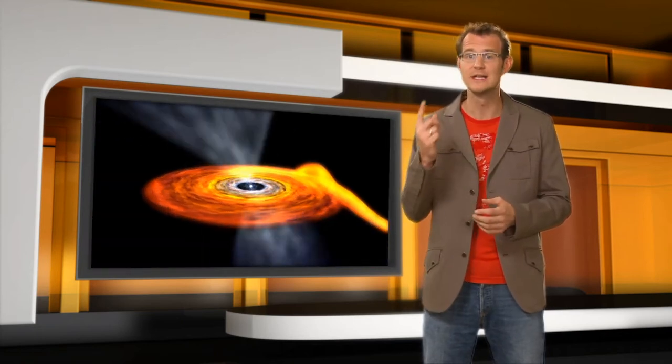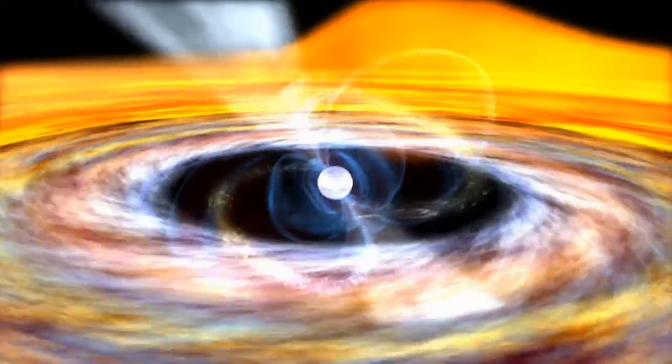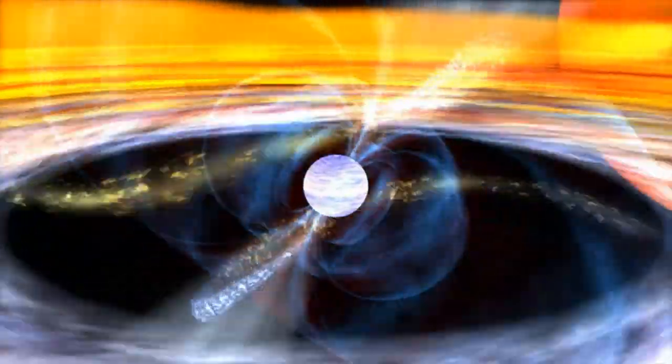So in effect, a pulsar looks like a rotating radio lighthouse. And what we see from them is a very regular and fast sequence of very short radio pulses. Hence the name.